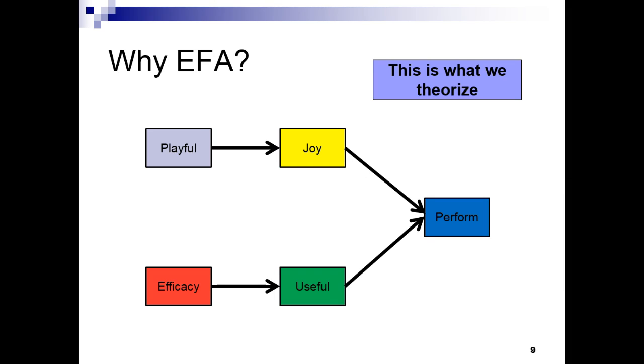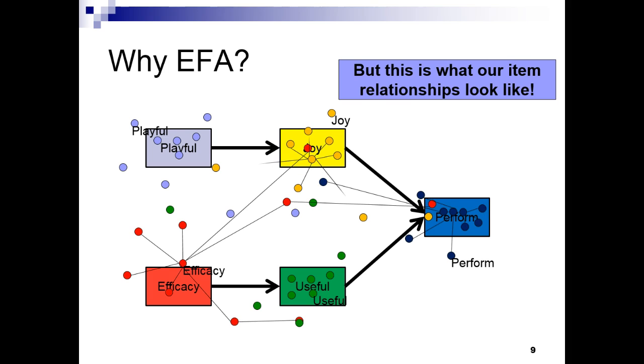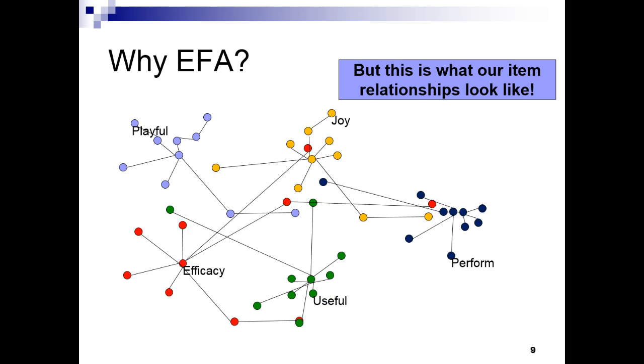So why do an EFA? Well, let's say we have our awesome theory that says playfulness predicts joy, efficacy predicts usefulness, and usefulness and joy predict performance. That's all fine and dandy, except that when we collect data, we use multiple items to measure each of these constructs. The circles here represent those items. Their proximity to each other represents how strongly correlated they are. Now, notice that this is not nearly as clean as the box and arrow model we envisioned. But in reality, this is what we are working with. Not all measured items capture their underlying construct effectively or consistently.